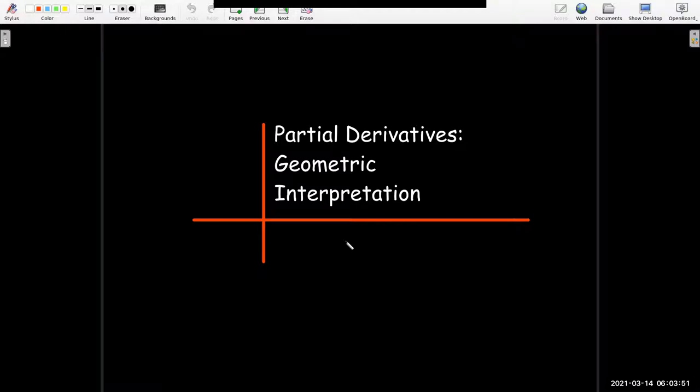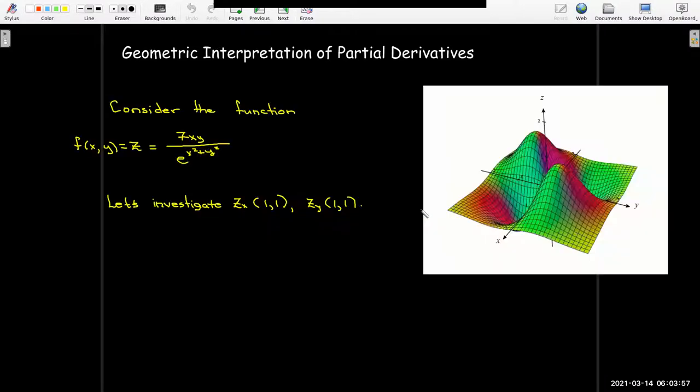In this short video we're going to look at a geometric interpretation of the first order partial derivatives. So suppose we have a surface, in this case the specific surface z equals 7xy over e raised to the power of x squared plus y squared.